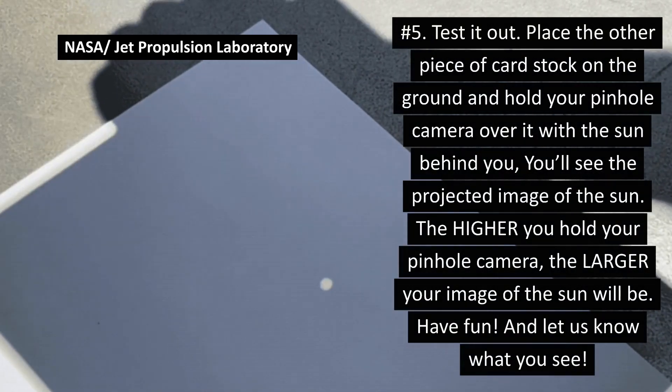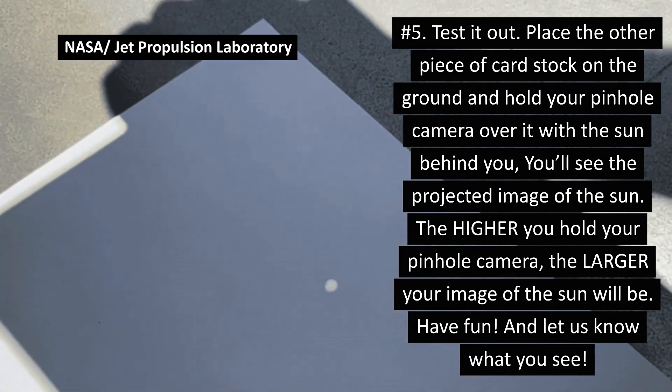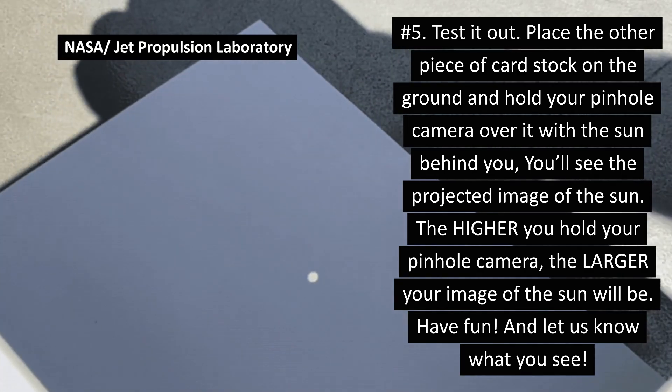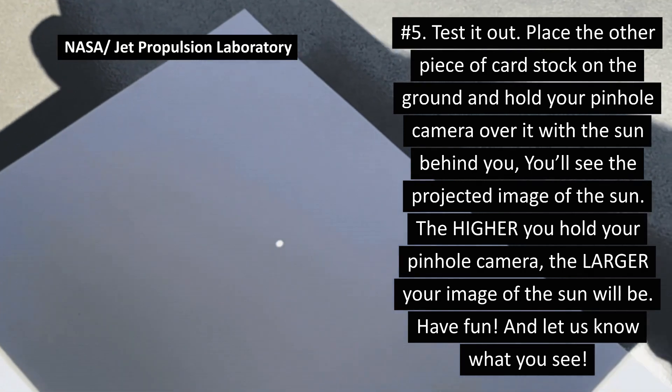Number five, test it out. Place the other piece of cardstock on the ground and hold your pinhole camera over it with the sun behind you. You'll see the projected image of the sun. The higher you hold your pinhole camera, the larger your image of the sun will be. Have fun and let us know what you see.